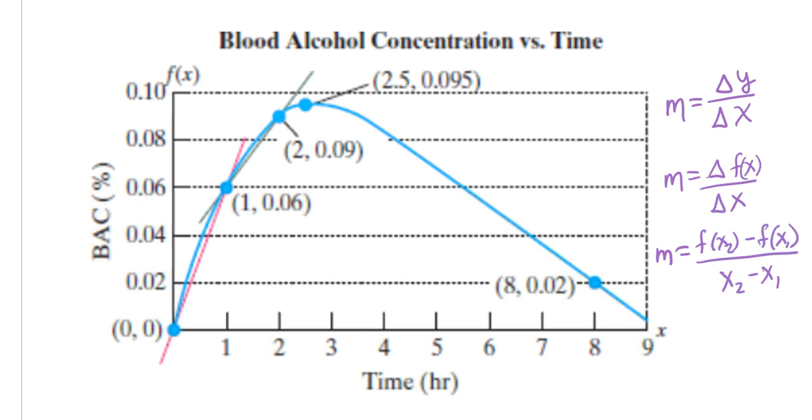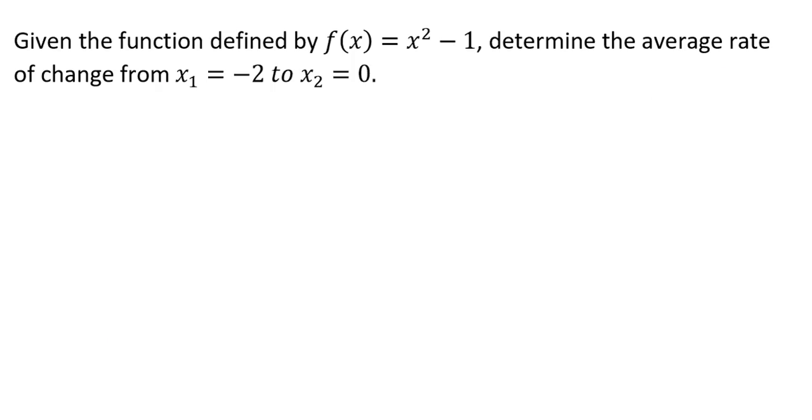Let's try this in a problem. Given the function defined by f(x) = x² - 1, which is not linear because it's a squared function, so this is a quadratic, determine the average rate of change from an x₁ of -2 to an x₂ of 0.